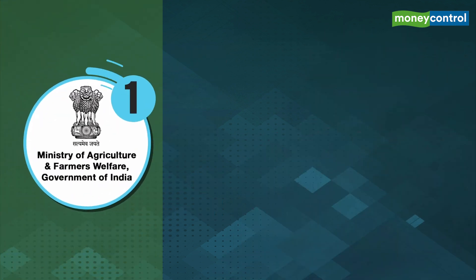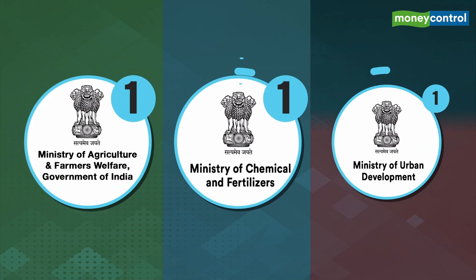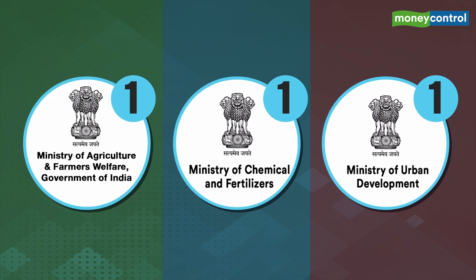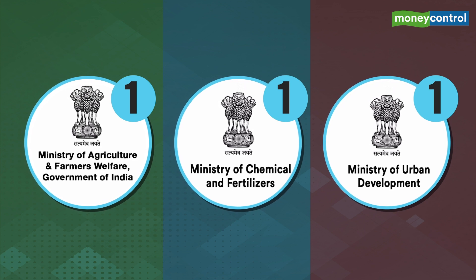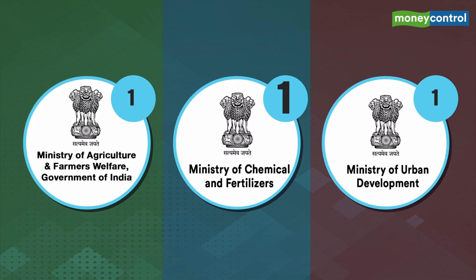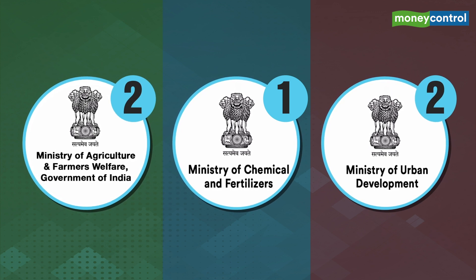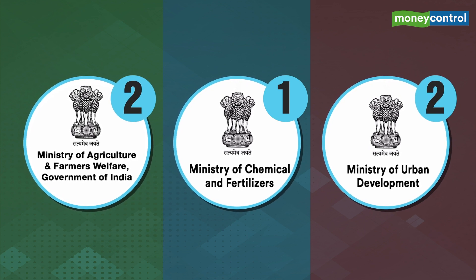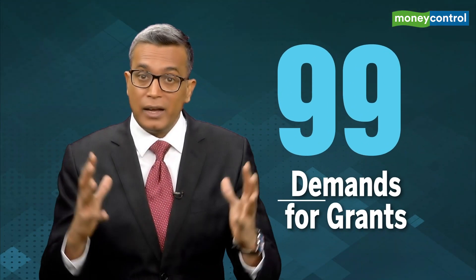Generally, one demand for grant is presented in respect of each ministry or department. However, more than one demand may be presented for a ministry or department depending on the nature of expenditure. In the budget 2018-19, there were 99 demands for grants. These are essentially annual expenditure plans of each department or ministry for the financial year.